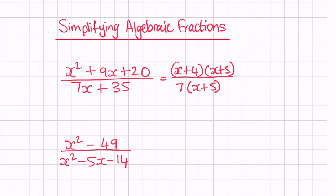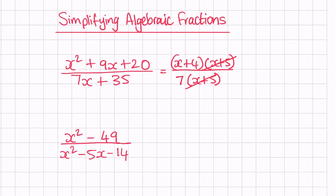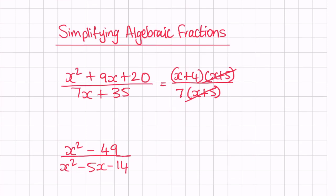Now we can see x plus 5 in the numerator and x plus 5 in the denominator, so we can cancel them out — divide both numerator and denominator by x plus 5. That leaves us with the answer x plus 4 divided by 7.